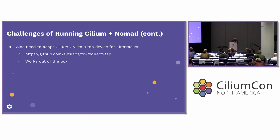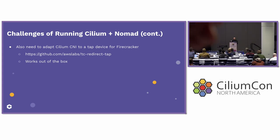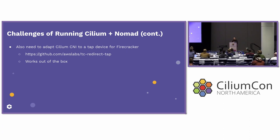Another thing we had to deal with, since we're running Firecracker, is that Firecracker expects a tap device. AWS — and Firecracker is their open source project — actually has a CNI plugin you can jam at the bottom of your CNI config that basically redirects everything to a tap device. And surprisingly, that all just worked. So just in case you were wondering — you can get Cilium through a tap device.